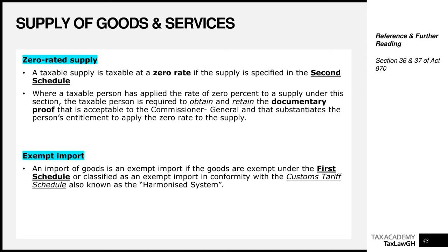While a taxable person has applied the rate of 0% to a supply, that person is required to obtain and retain documentary proof acceptable to the Commissioner General that substantiates the person's entitlement to apply the rate of 0%. You can't just decide to apply a zero rate — you must have documentary proof showing you have met the qualifying conditions.